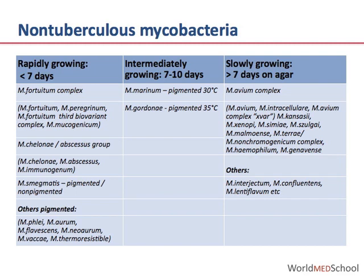The Mycobacterium avium intracellulare complex is the predominant group of organisms among the slowly-growing mycobacteria, which take at least seven days and up to several weeks to grow. Other important non-tuberculous mycobacteria with the potential for causing disease include Mycobacterium kansasii, Mycobacterium xenopi, and Mycobacterium ulcerans, which is responsible for causing Buruli ulcer.